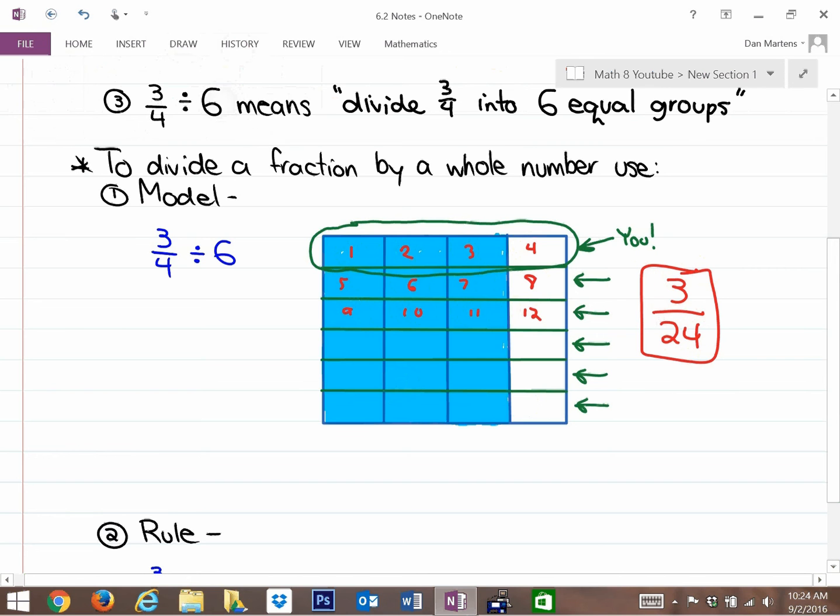Out of—if you count all the pieces—1, 2, 3, 4, 5, 6, 7, 8, 9, 10, and you'll notice there's 24. So you would get 3 out of 24 parts, or if you reduce that answer, you would get 1/8 of the original cake.